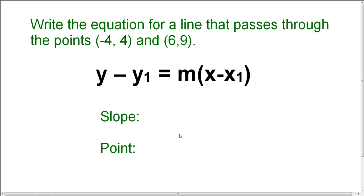So let's take a look at an example. For this example, we're going to write an equation in slope-intercept form for a line that passes through the points negative 4, 4 and 6, 9. And we're going to use point-slope form to do that.